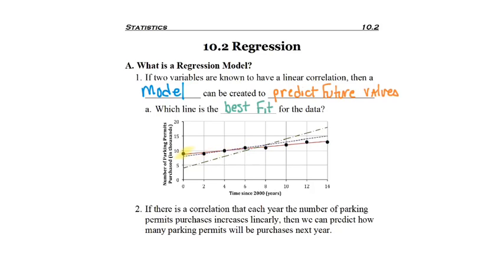in the year 2000, we can see that just shy of 10,000 parking permits were purchased. My y-axis is number of permits purchased in thousands. And then it looks like it dropped a little bit over here in 2004. It looks like about 10,000 parking permits were purchased.